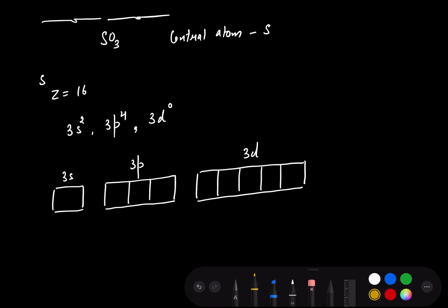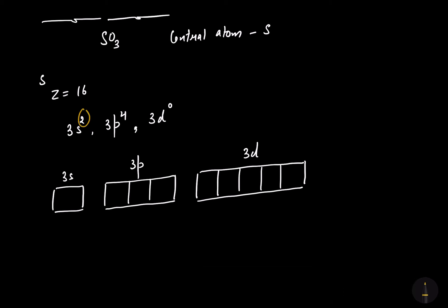Now let's fill the electrons according to the electronic configuration. The 3s is having 2 electrons. Now 3p is having 4 electrons in its valence shell, so we fill those 4 electrons according to Hund's rule — all the degenerate orbitals of 3p get 1 electron each, then pairing starts. This is the ground state electronic configuration of the sulfur.